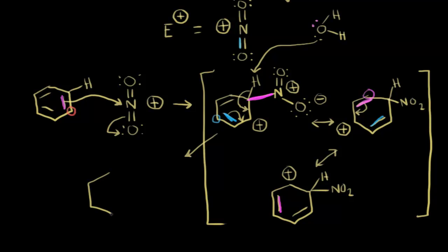We reform our benzene ring. Deprotonation of the sigma complex — removing that proton — yields our product with a nitro group substituted in. These electrons in green, when the sigma complex is deprotonated, move in to restore the aromatic ring. We've created our product with the nitro group added. That's the mechanism for nitration.